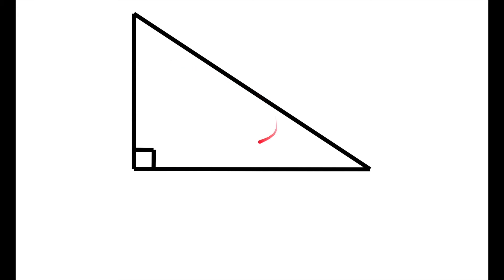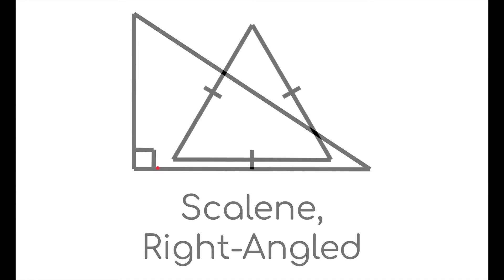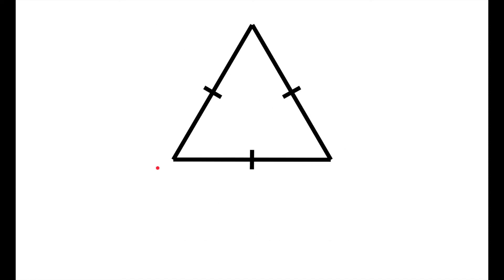What about this one? There are no two sides that are the same — they are all different — so it's a scalene triangle. And it also has a right angle, so it's a right angled triangle.